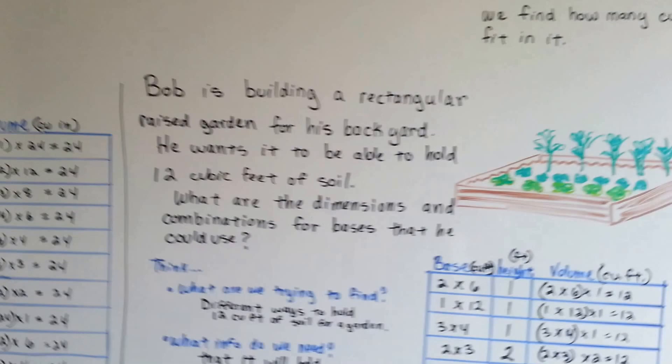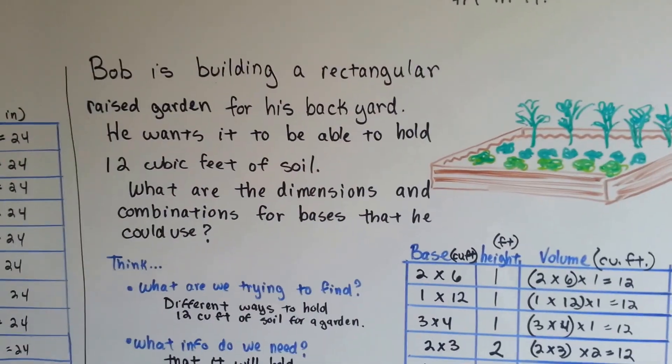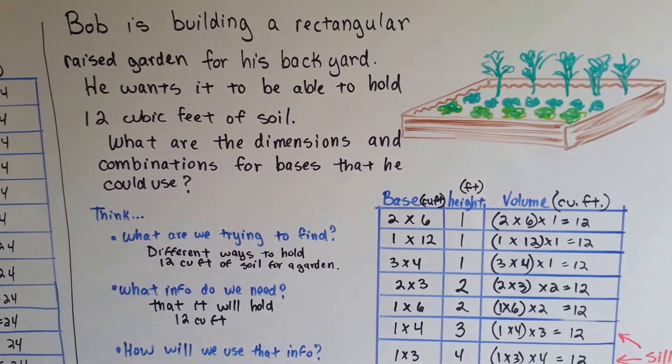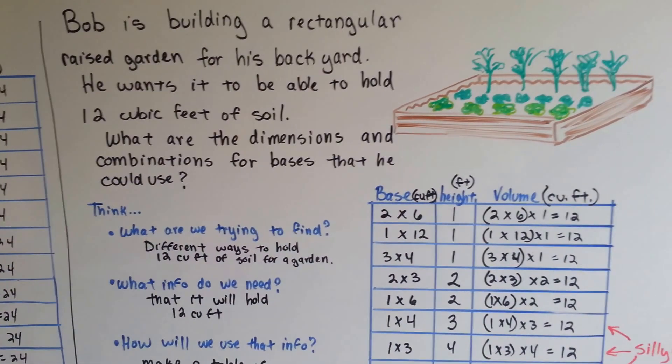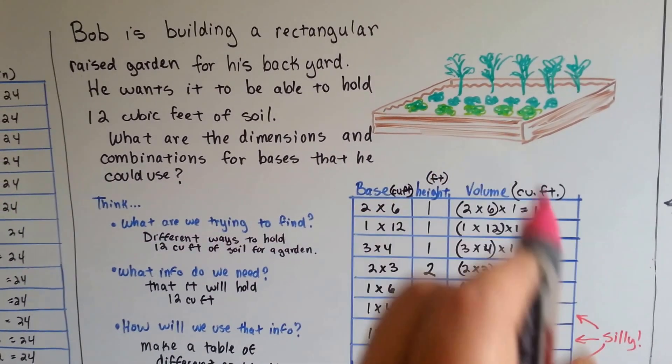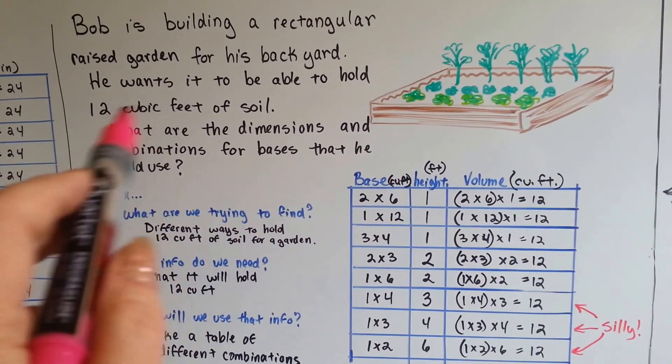How about if Bob is building a rectangular raised garden for his backyard and he wants to be able to hold 12 cubic feet of soil? What are the dimensions and combinations for bases that he could use? This one probably would be the best. It looks like maybe three feet by four feet for his 12 cubic feet of soil.